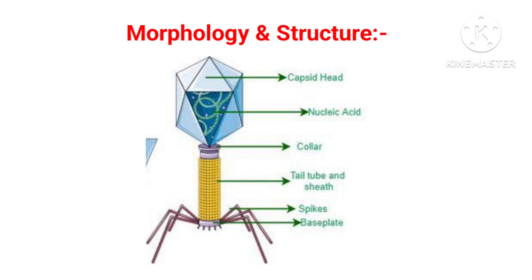This is a typical structure of a Bacteriophage. It is a highly organized structure which resembles like a tadpole. The three main parts of a Bacteriophage are head, neck, and tail.